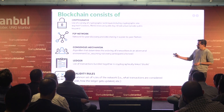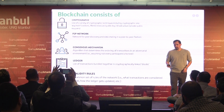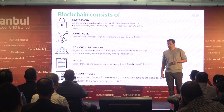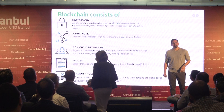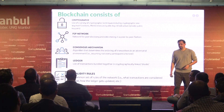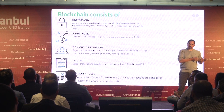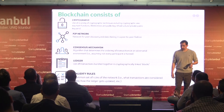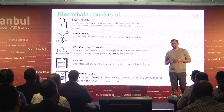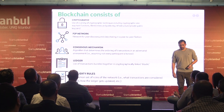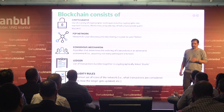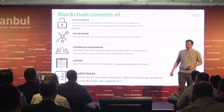Blockchain consists of cryptography, so we need a system that is highly cyber resilient. We have a P2P network - something like Napster from some years ago. The idea behind it is to have a distributed system of nodes. We have a consensus mechanism - something we need in order to say which information gets stored in the blockchain. We have ledgers, and we have validity rules coming from the technology - Bitcoin, Ethereum, Dash, all kinds of different technologies.